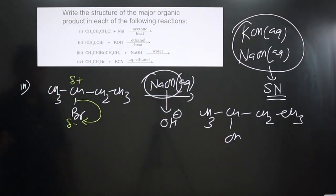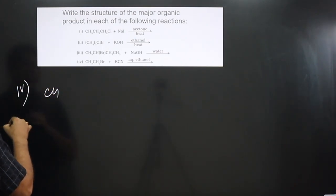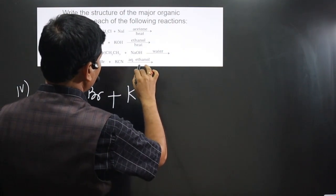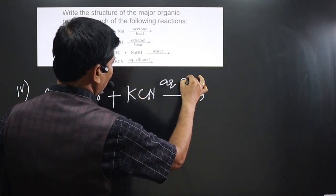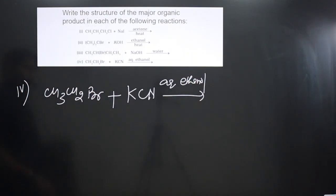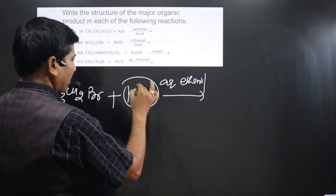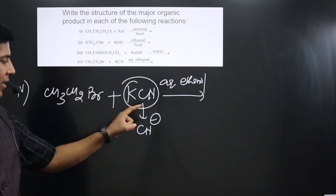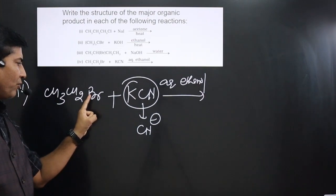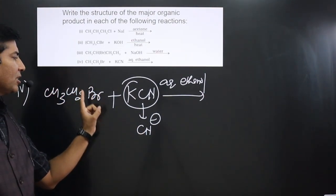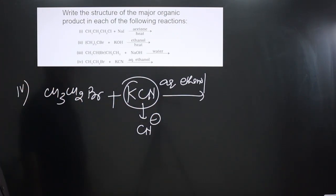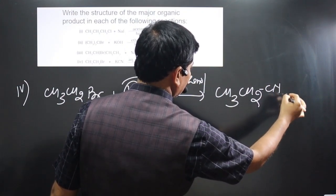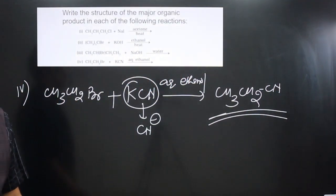The fourth reaction: CH₃CH₂Br reacting with KCN in aqueous ethanol. This is also a nucleophilic substitution reaction. CN⁻ is liberated as a strong nucleophile, while Br⁻ is a weak nucleophile. The strong nucleophile CN⁻ kicks out Br⁻, which combines with K⁺ to form KBr. The product is CH₃CH₂CN — ethyl cyanide (common name) or propanenitrile (IUPAC name).